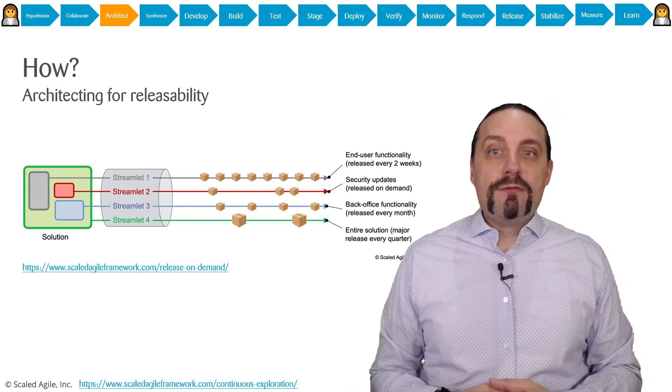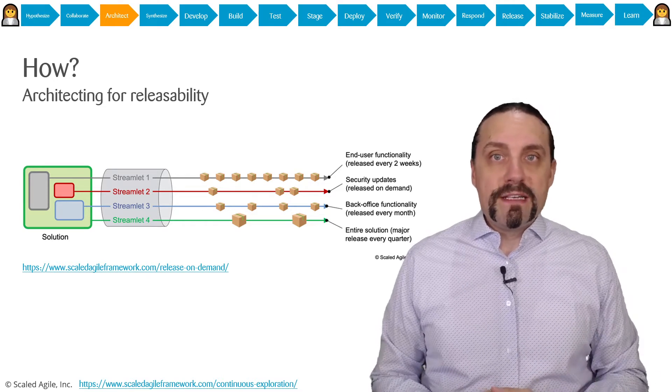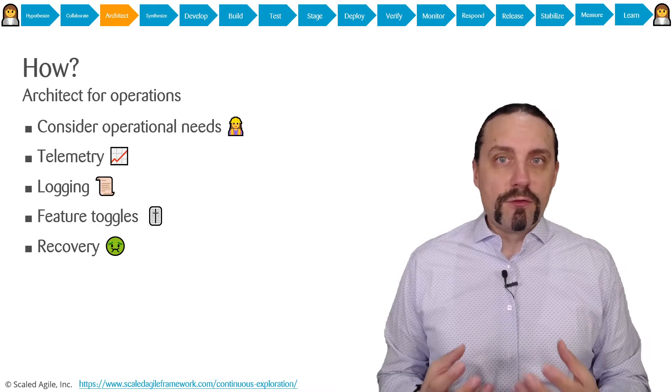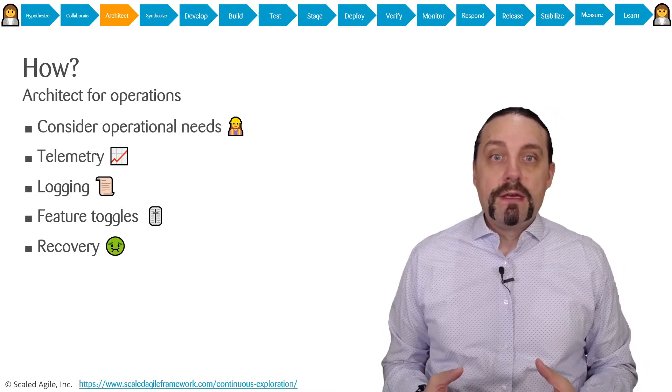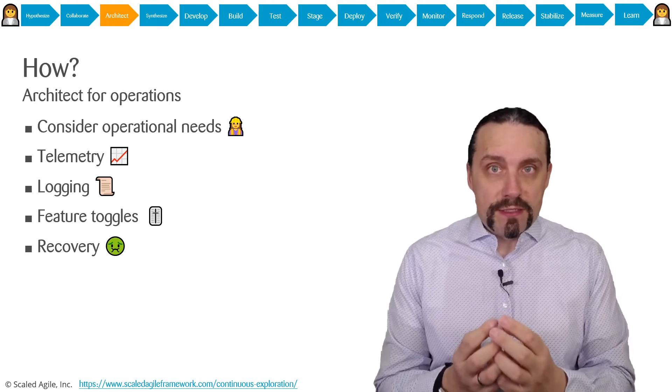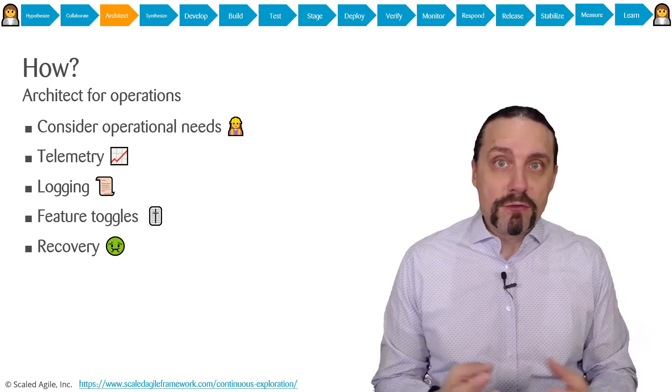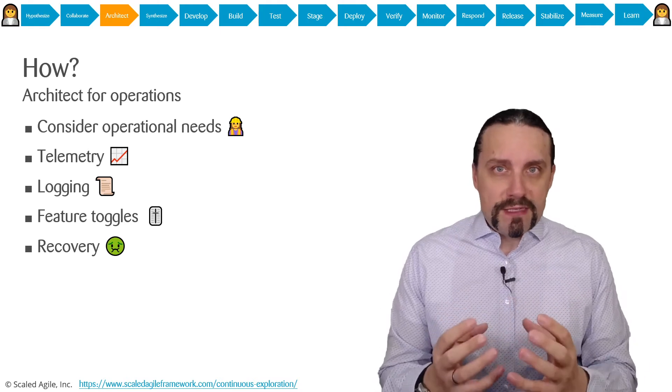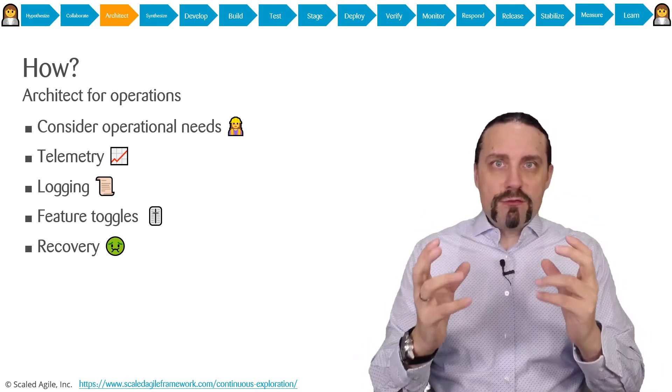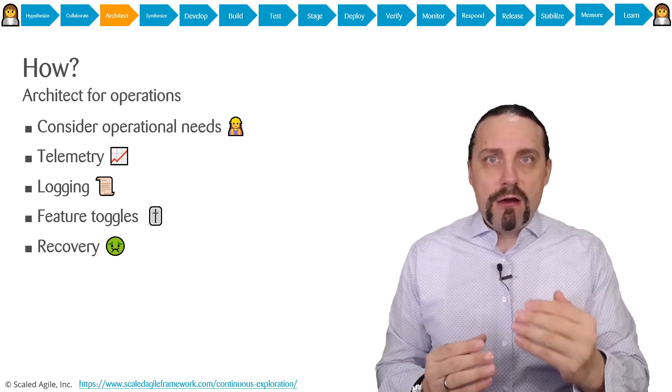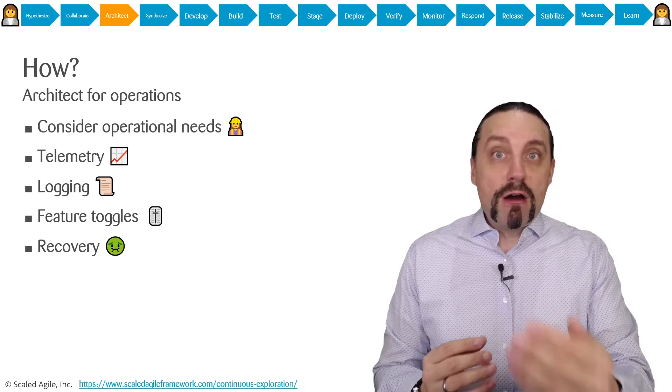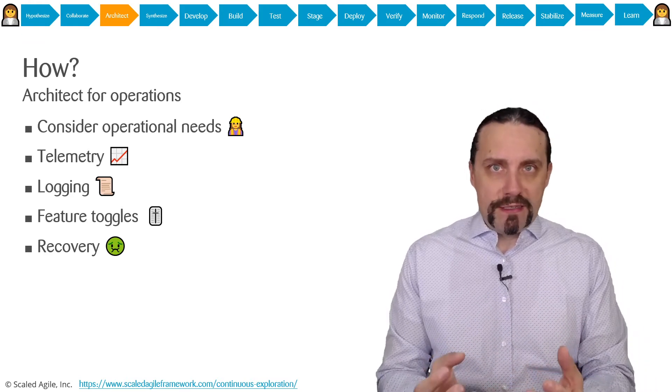You also need to architect for operations. You need to take operational needs into consideration when architecting. It means when you're architecting, you need to think about how will I operate this in production? How are we going to operate this thing?